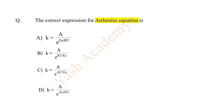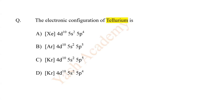The correct expression for the Arrhenius equation is — answer A: K is equal to A times e raised to the power of minus Ea upon RT.